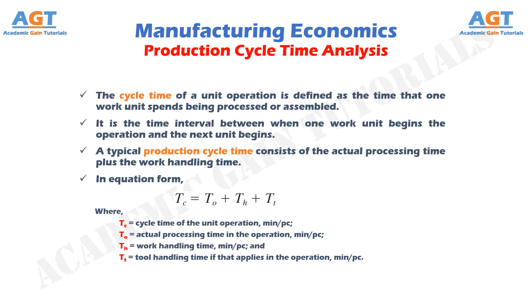The tool handling time usually occurs periodically, not every cycle, so the time per work piece must be determined by dividing the actual time associated with changing the tool by the number of pieces between tool changes. It should be mentioned that many production operations do not include a tool change, so that term is omitted from the first equation in those cases.